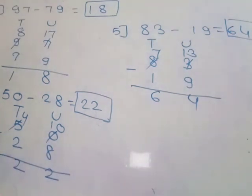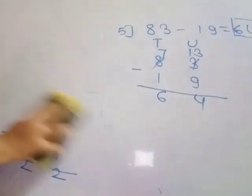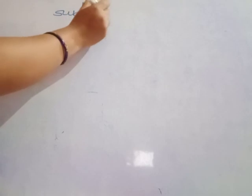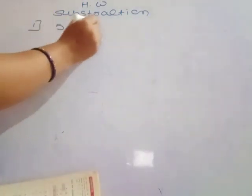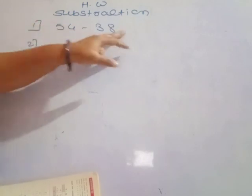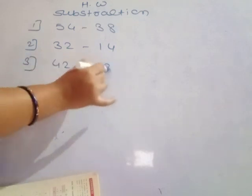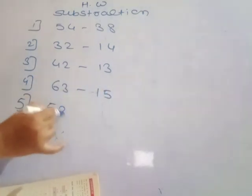In this way, we do two-digit number subtraction with borrowing. For homework, write all these examples and complete them: 54 minus 38, 32 minus 14, 42 minus 13, 63 minus 15, and 53 minus 17. Arrange each horizontally given problem vertically and write the answers.